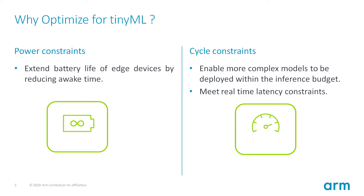Reducing the cycles for inference reduces the awake time of the processor and the system, resulting in extended battery life. It also enables more complex models to be deployed within a given inference time budget. These are factors that could push an application from being unrealistic to realistic.